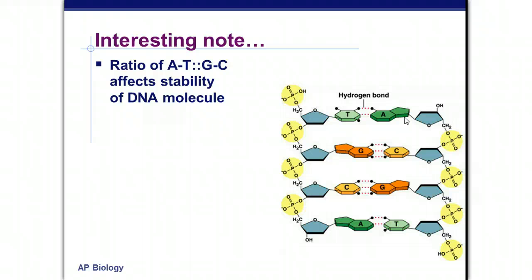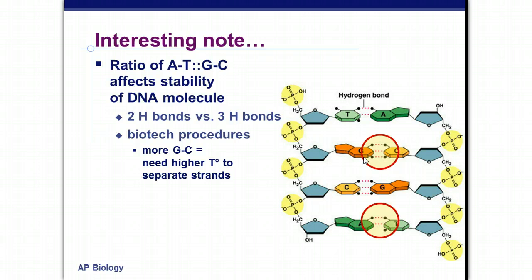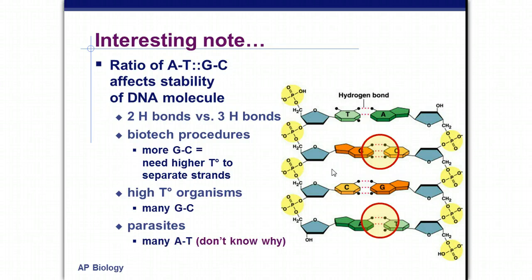Back to biology. A little interesting note, the ratio of adenine to thymine and guanine to cytosine affects the stability of the DNA molecule. And that has to do with the fact that for every adenine and thymine, there's two hydrogen bonds. And for every guanine to cytosine pairing, there's three hydrogen bonds. So the more guanine to cytosine there is in your strand of particular DNA that you're looking at, you need to use a higher temperature to separate those strands. So that has implications in biotechnology procedures, which we'll discuss further in our biotechnology unit, but just something to think about. And also it has implications for organisms that exist at higher temperatures. They have more guanine and cytosine in their DNA than adenine and thymine. And parasites have lots of adenine and thymine, and it's still kind of not known why that is.